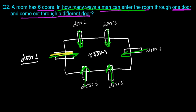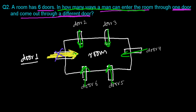Let's suppose the guy is going to enter from door one. Then he cannot go outside from the same door, because the rule says he must come out through a different door. So door one is blocked for exit, and the guy now has only five options to go out.